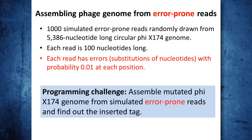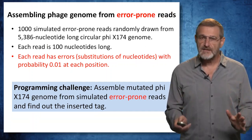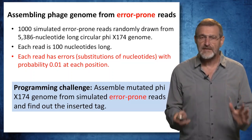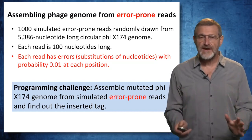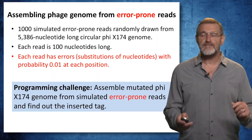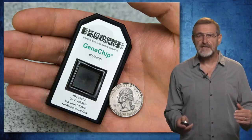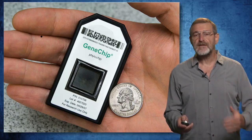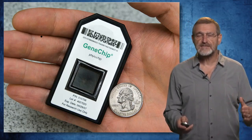This programming challenge is very similar to the challenge that Fred Sanger, the inventor of modern DNA sequencing, faced 30 years ago when he assembled the same phage genome. However, at that time, sequencing was very expensive. Extending his sequencing method to the human genome would cost hundreds of billions of dollars and would be impractical. That's why many scientists tried to find a better experimental technology to sequence genomes, and that's how they came up with the idea of gene chips, which we will discuss in the next section.